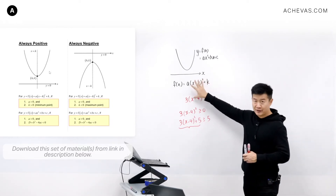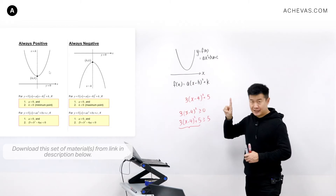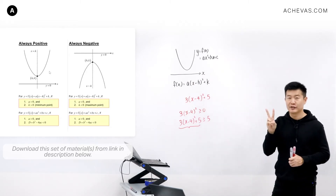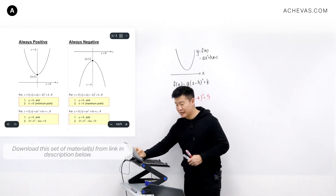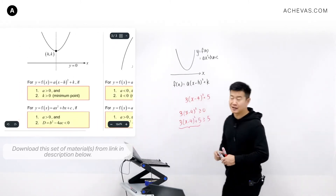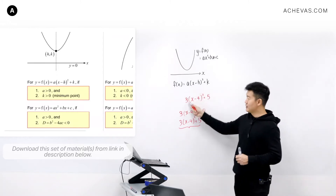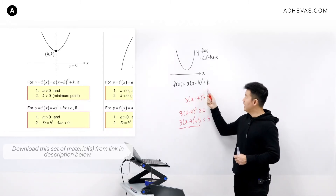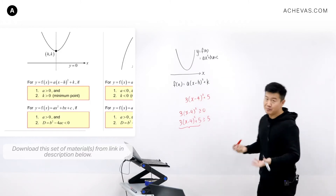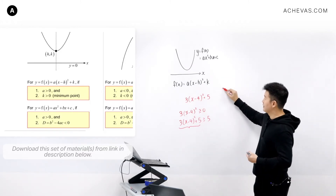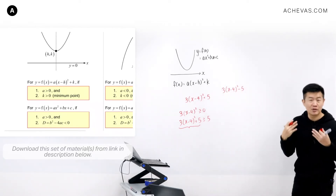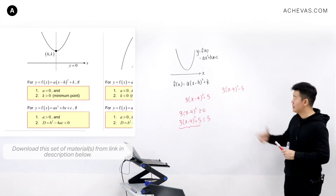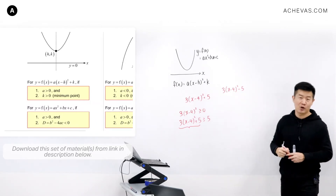We can derive this from the completed square form, but there must be two conditions. First, a must be bigger than 0. Second, k must be bigger than 0 — for example, a equals positive 3 and k equals positive 5. If instead you have something like 3(x minus 4) squared minus 5, where k is less than 0, then you cannot determine whether the expression is always positive or always negative.